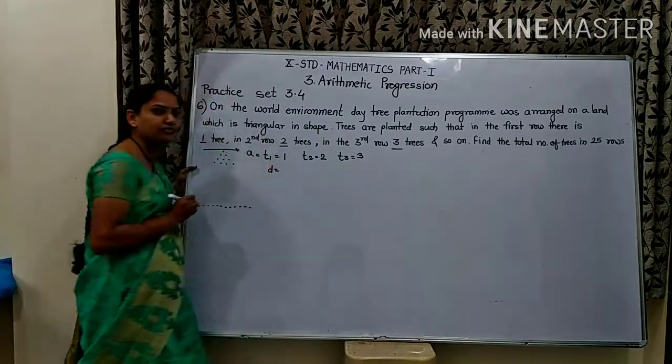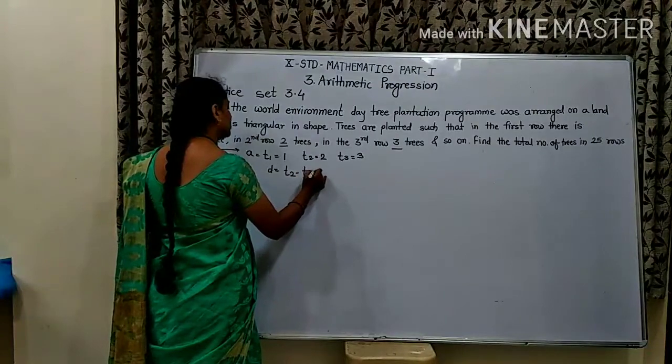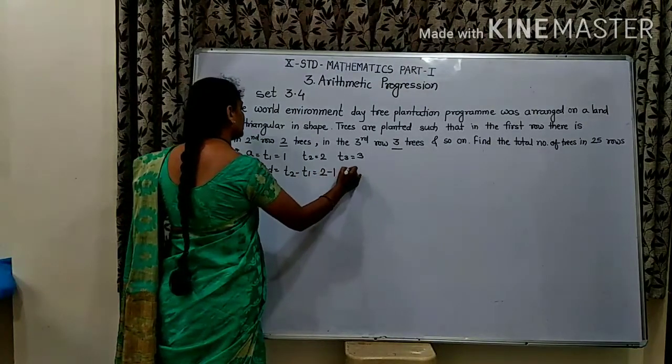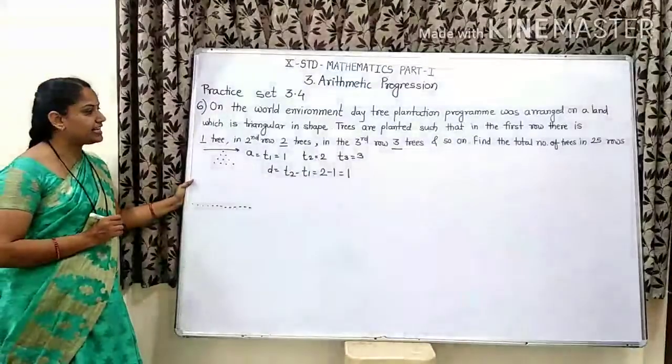Common difference is equal to T2 minus T1, which is 2 minus 1, that is equal to 1. So common difference is 1.